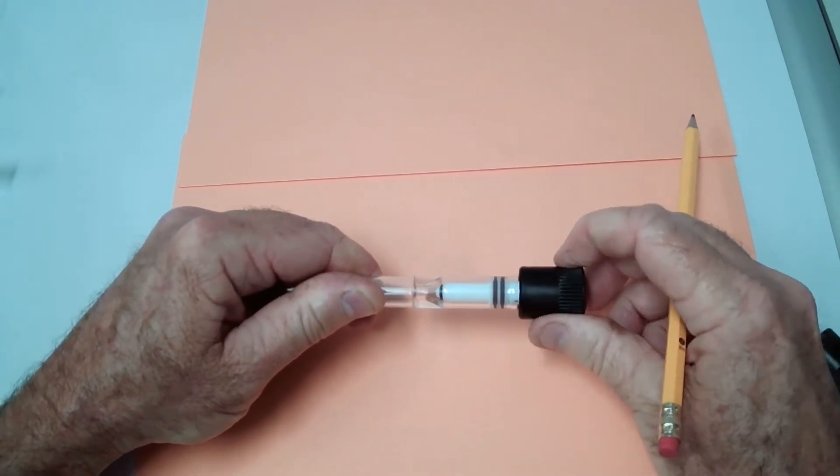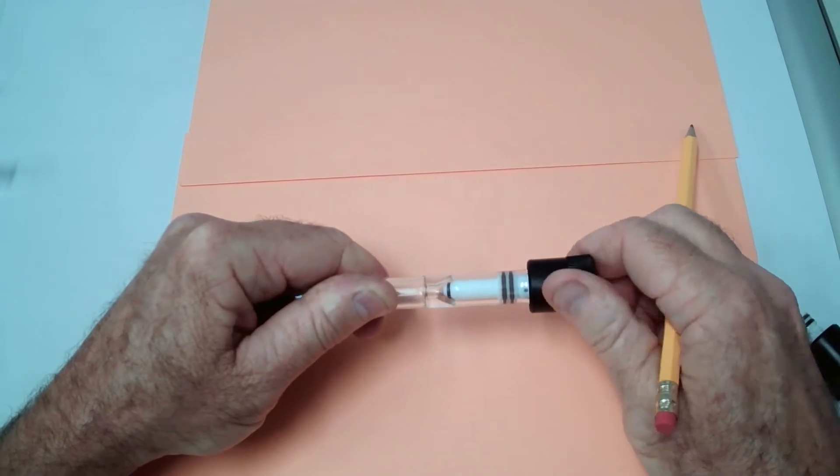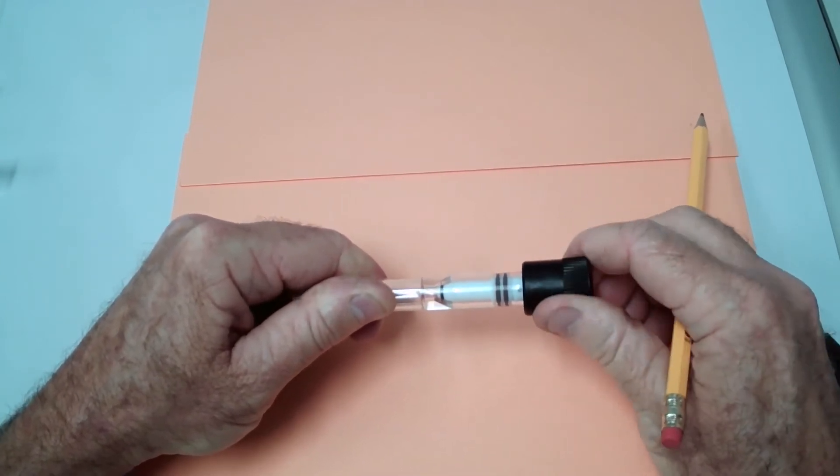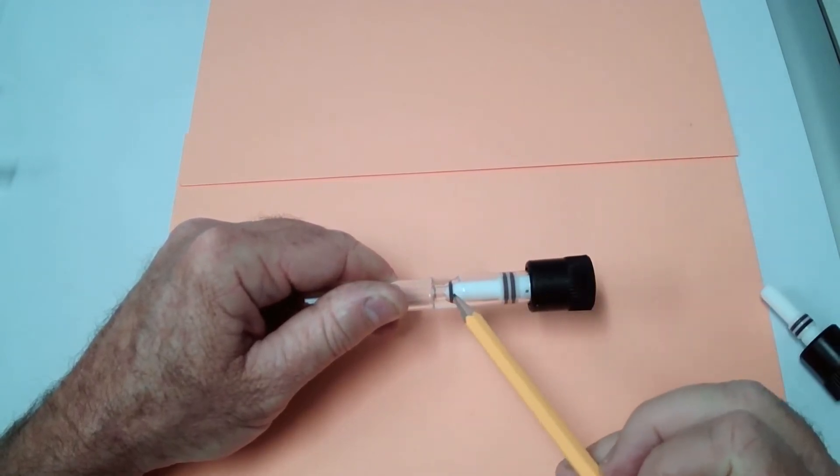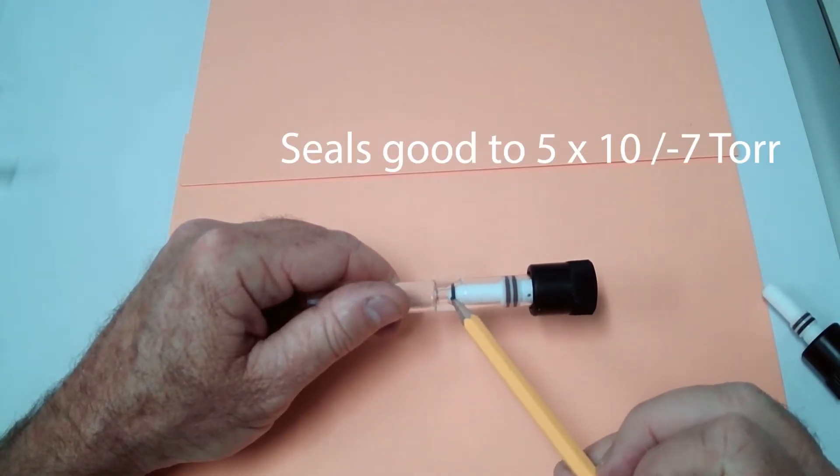And then as you turn this down, you will see the tip of the plug coming in contact with the valve seat right there. It squishes that a little bit and closes it up right there.